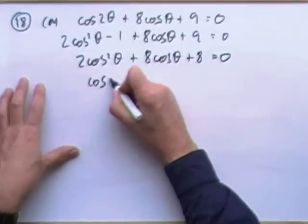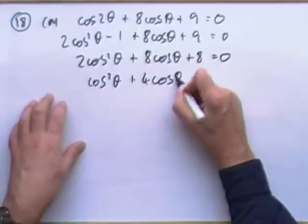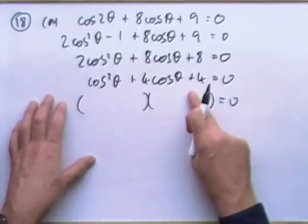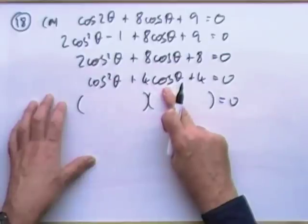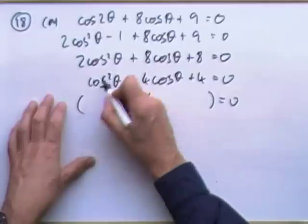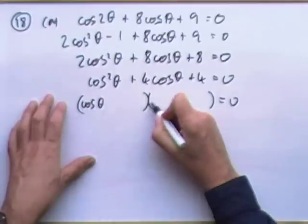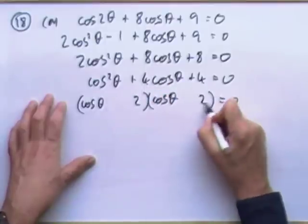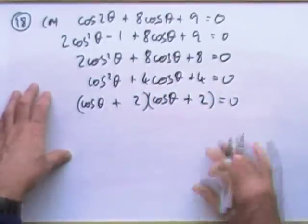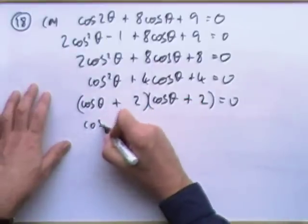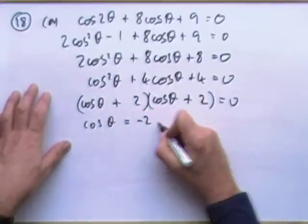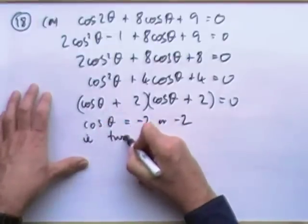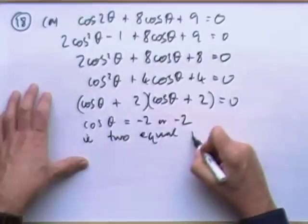Divide everything by 2: cos²θ plus 4cosθ plus 4 equals zero. Factorize: (cosθ + 2)(cosθ + 2) equals zero, so cosθ equals negative 2, or negative 2 again — in other words, negative 2 twice. That demonstrates two equal roots.